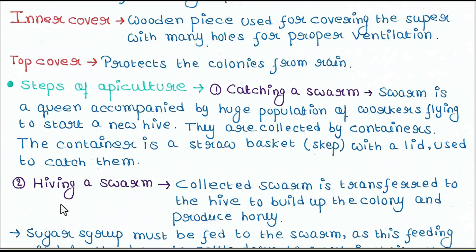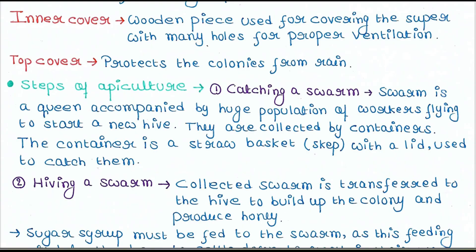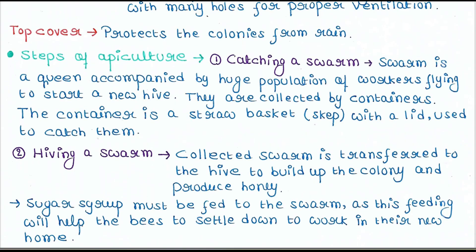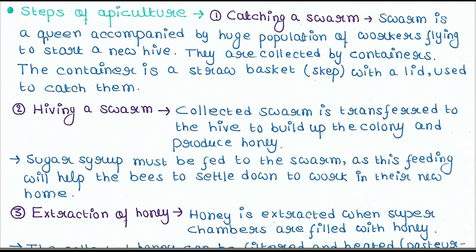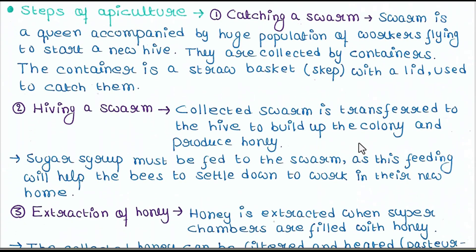Next is hiving a swarm. The collected swarm is transferred to the hive to build up the colony and produce honey. Sugar syrup must be fed to the swarm, as this feeding will help the bees to settle down and work in their new home.